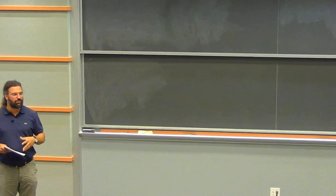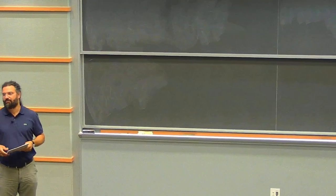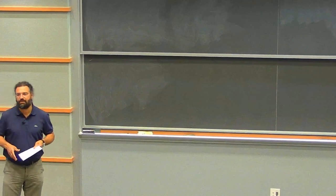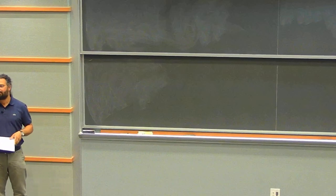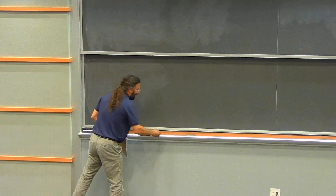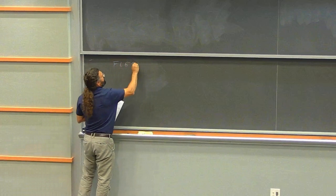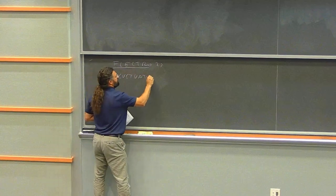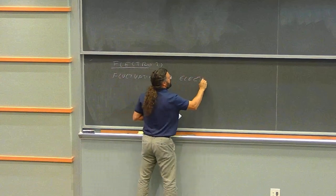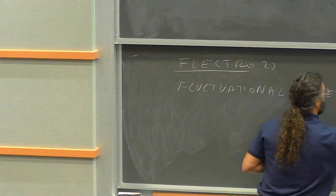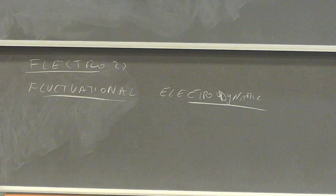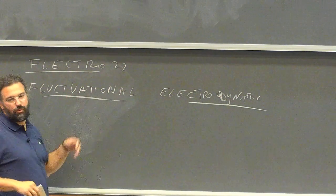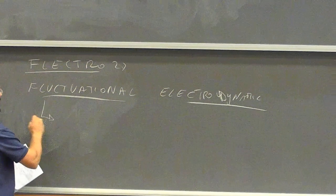Thank you for being here. The objective of this blackboard talk will be quite pedagogical, so I will try to explain what is the object of our program from the very beginning. If you have questions during the talk, just ask and I will try to reply if I know the answer. Our program is FLECTRO 22 — FLECTRO means fluctuation and electrodynamics.